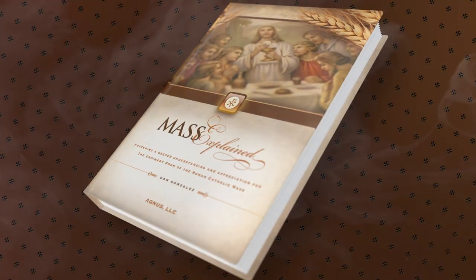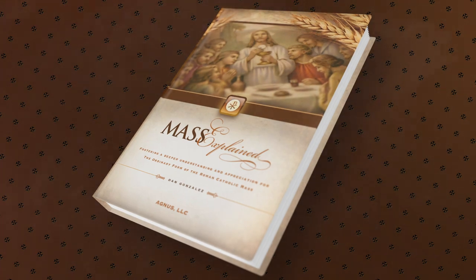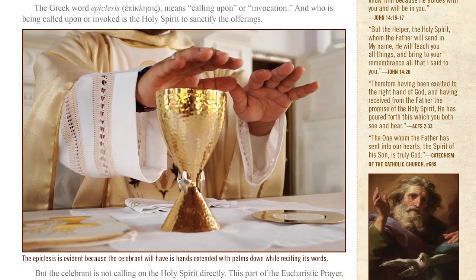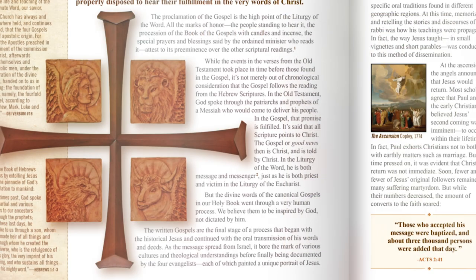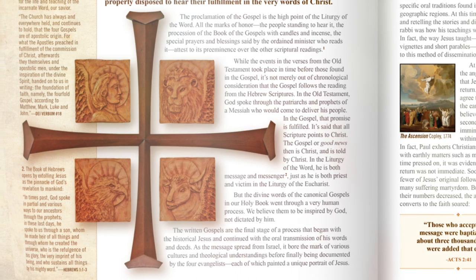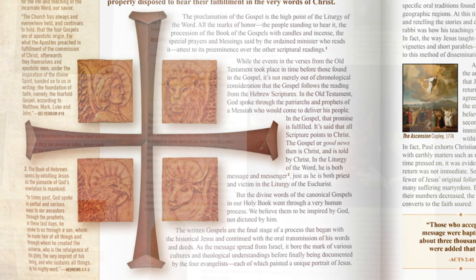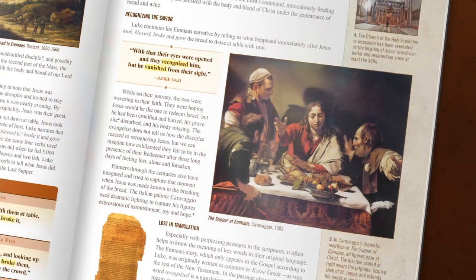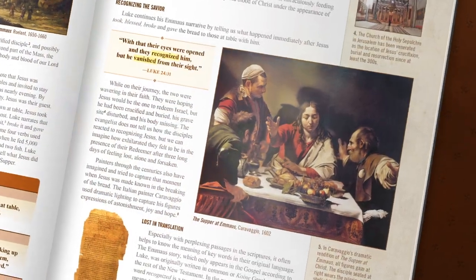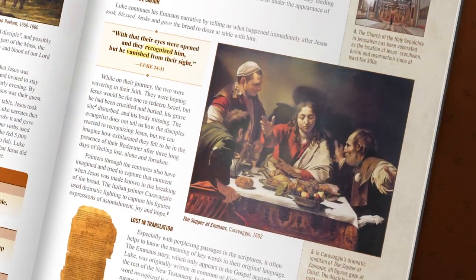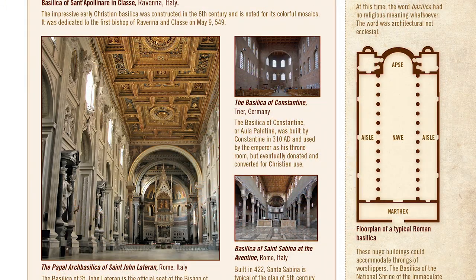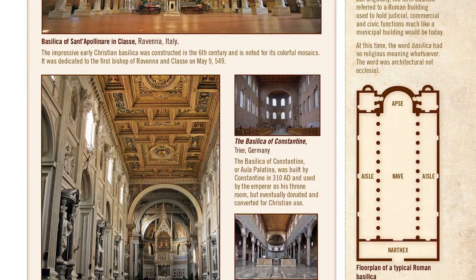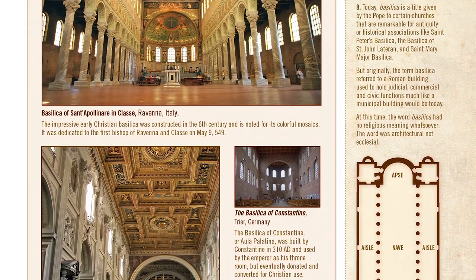Mass Explained explores all parts of the Mass — its prayers and postures, ministers and music, and its signs and symbols. But it's more than just text on a page. Mass Explained enlists the Church's vast inheritance of sacred art and architecture to help tell the story of the liturgy.